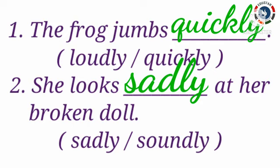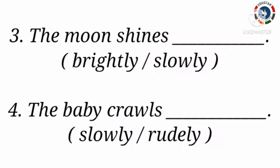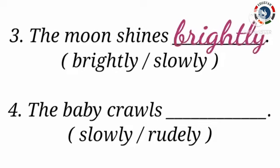Now let's move to the next question. The moon shines ___. Options are brightly and slowly. Children, which is the correct answer? Yes, brightly. Because the word brightly describes the action word 'shines'. So the correct answer is brightly. The moon shines brightly.